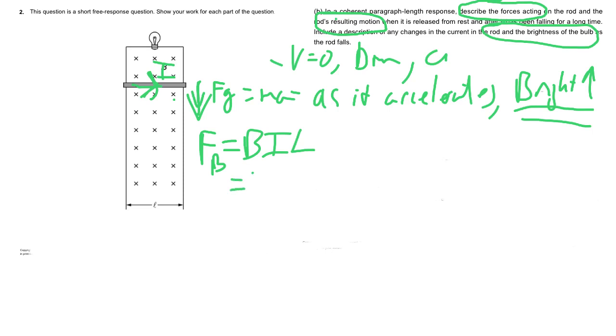So the FB is going to be moving up on the bar. So you have an FG going this way and then you have an FB going upwards. And in fact as this gets faster, the force due to the magnetic field is going to increase, and eventually you're going to reach an equilibrium point where these two forces are in balance.